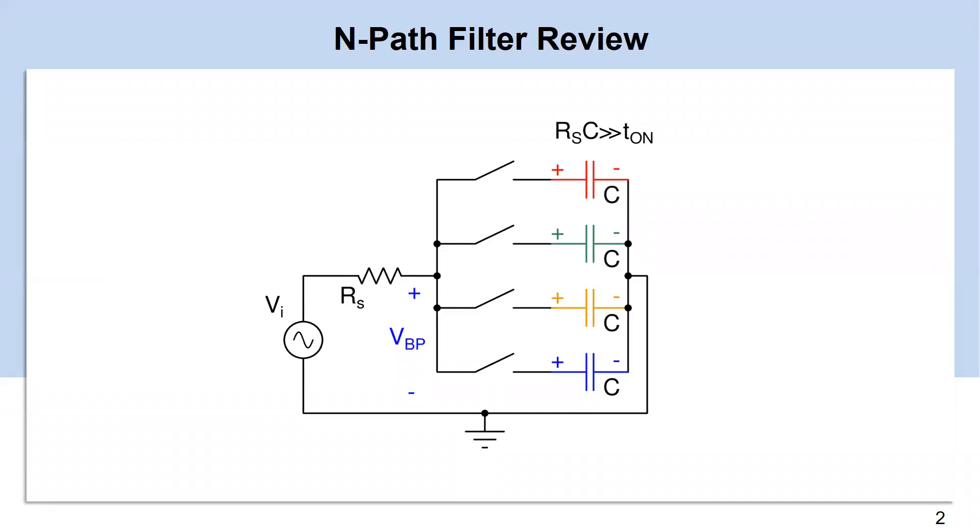N-path bandpass filter works with non-overlapping clocks. To operate N-path filter, clock frequency should be the same as input frequency. If this condition is fulfilled, then individual capacitors see identical phase of input at each cycle and hence get charged to the average input voltage corresponding to that phase.